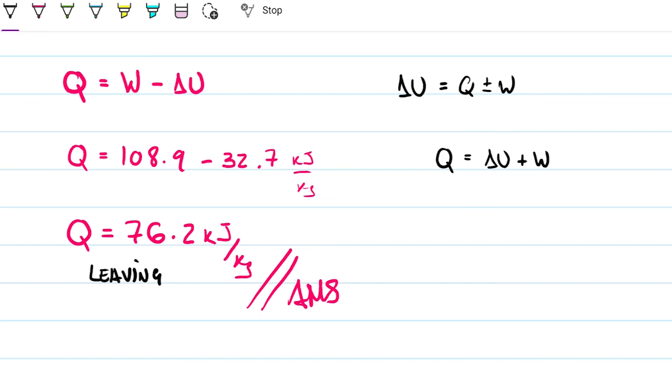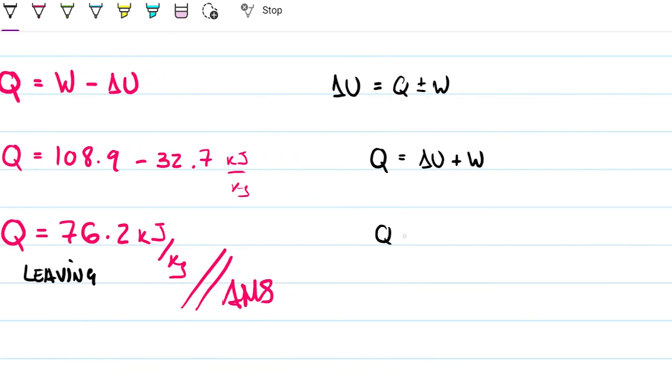In this case here, Q is going to be the 32.7 minus, because you have the negative work there if you're using signs, which I don't like you do but that's going to happen. And then you're going to have Q equals negative 76.2 kilojoules per kilogram. So there, that's negative telling you that the heat is leaving.